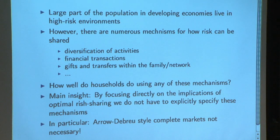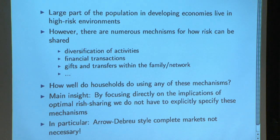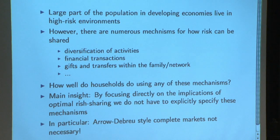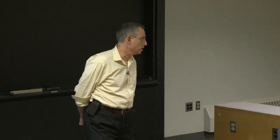How are households doing? The idea in this paper is: forget enumerating all the mechanisms — you're likely to miss one anyway, and the measurement might be really bad. Let's just look at the outcomes. The null hypothesis: if risk sharing were perfect, what would you expect to see in consumption and income data? Perfect means complete, as in complete markets. Informal institutions can be at work, as well as some spot market exchanges. You don't need to take a stand on any of that if you're just going to look at the outcomes.